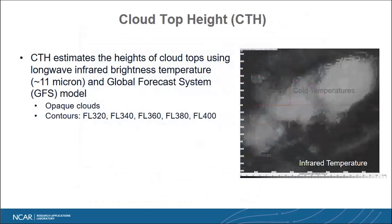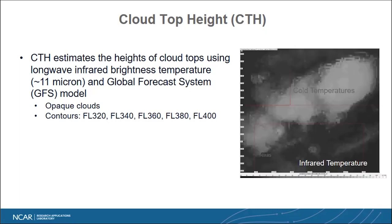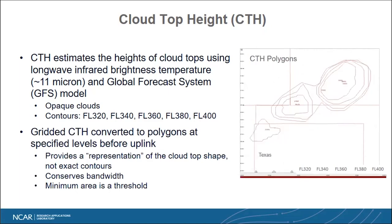On the cloud top height product itself, this is an estimate of the cloud top from the 11 micron channel — a window channel from the geostationary orbiter. It can see an opaque cloud; it looks at the temperature of the cloud, we reference that with a model, and then derive a height. From those heights we can do contours at different flight levels: 32,000 feet, 34,000, up to 40,000. These contours reduce bandwidth for uplink to the cockpit.